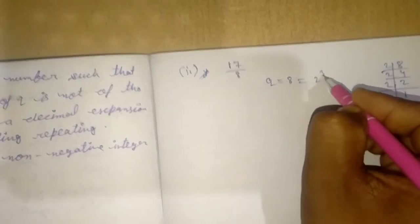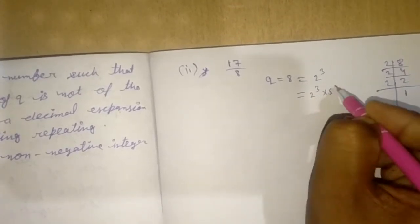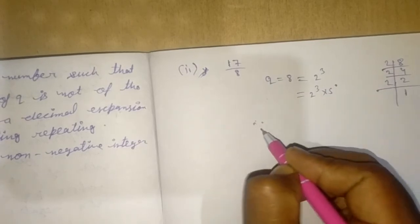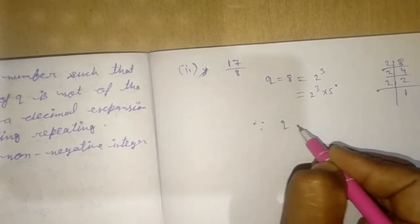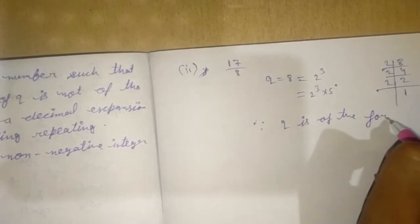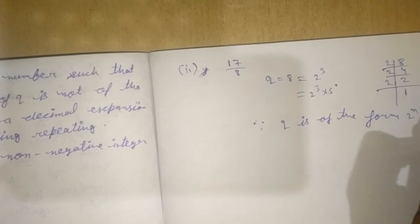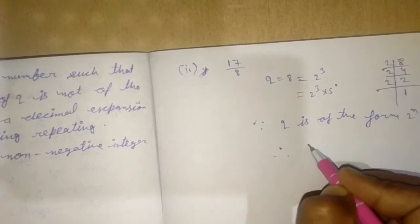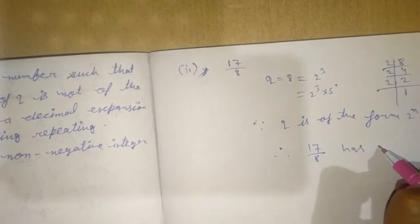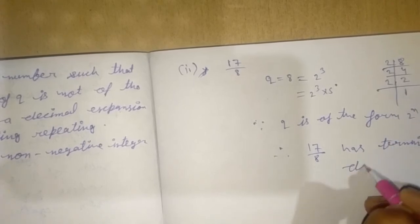So 2 power 3 equal to 2 power 3 into 5 power 0. We can observe that q is of the form 2 power n into 5 power m. Since q is of the form 2 power n 5 power m, therefore 17 upon 8 has terminating decimal expansion.